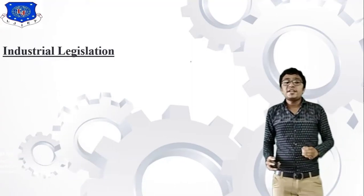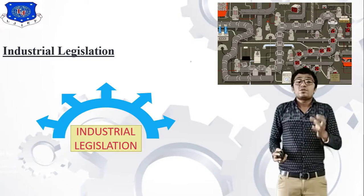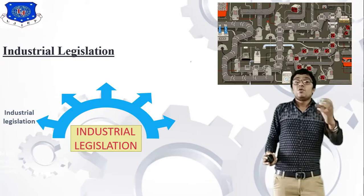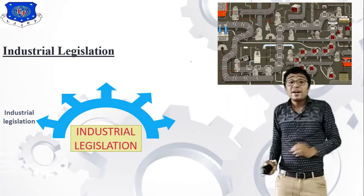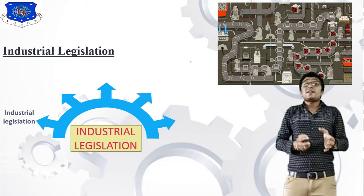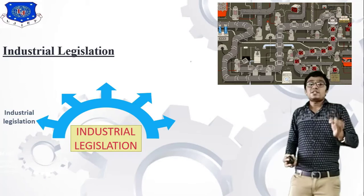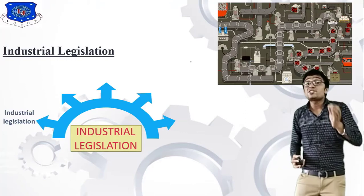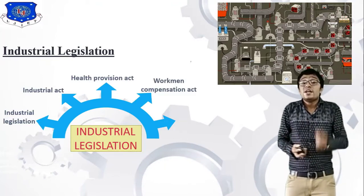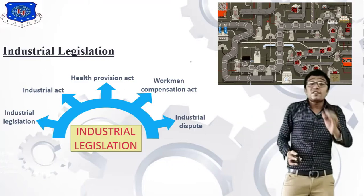The fifth chapter is Industrial Legislation. Industrial legislation deals with different types of laws — for machines, for workers, for men. These are laws developed by the government that our industry must follow. Our task is to improve productivity and profit according to rules and regulations. Topics include industrial dispute rules, workman compensation rules, health provision rules, and safety provision rules.